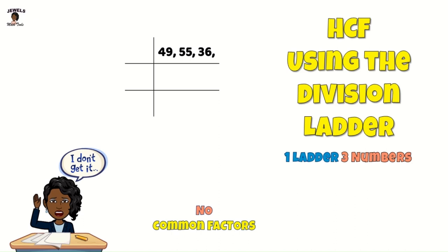Hello and welcome back to Joel's My Tools. In our session today, we will be calculating the HCF or the highest common factor when using the division ladder and we have three numbers with no common factors. So if you're ready, let's get started.